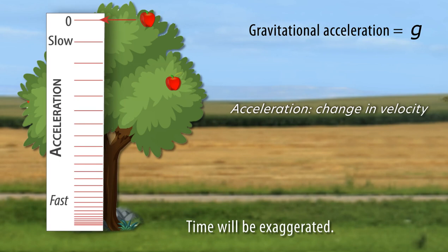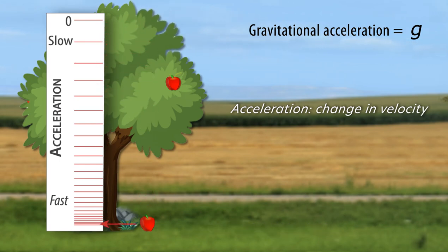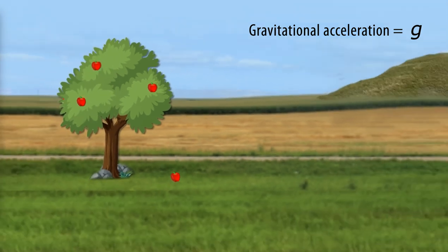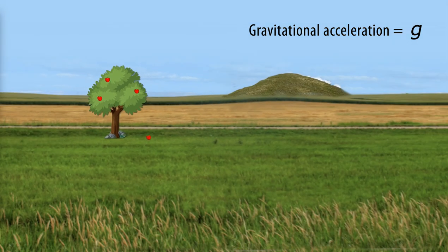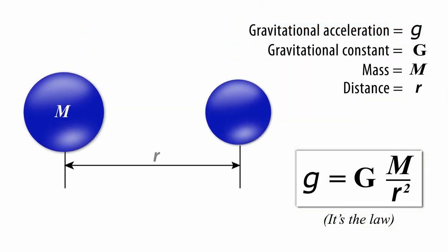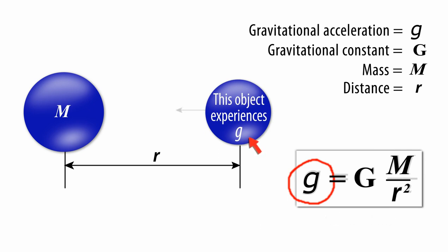Gravitational attraction can be expressed as an acceleration. When an apple falls from a tree, it accelerates downward. Scientists call this gravitational acceleration small g. After the apple lands, gravitational attraction holds it to the surface. Newton's law of gravitational attraction defines gravitational acceleration, small g, of one object due to another mass.